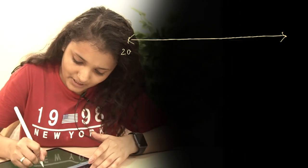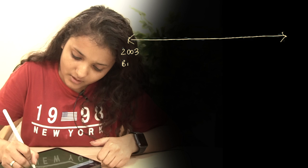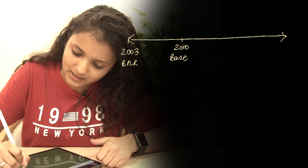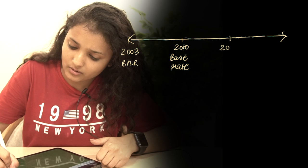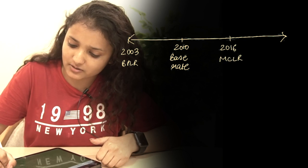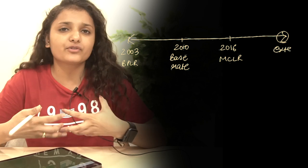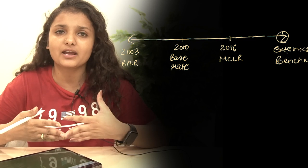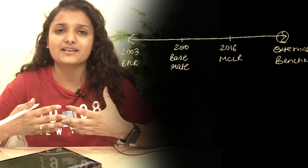Because of this concept, there has been interest rate evolution from the start. To give an overview, I shall be drawing a timeline. In 2003, the BPLR system was introduced. In 2010, the base rate system was there. In 2016, MCLR was in place. And now it is the external benchmark system. We will be discussing everything in detail, and this is a really important topic — you could expect a question from this in your examinations.